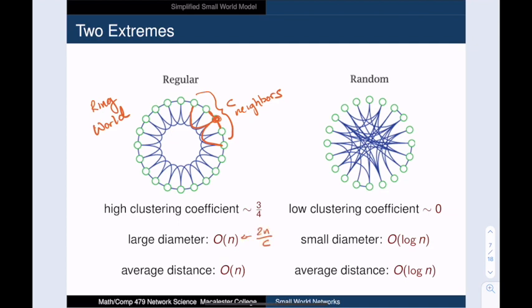The network on the right is an Erdos-Renyi random graph, with Cn over two edges. This random graph has the exact same number of edges as the ring world, but it has very few triangles. On the other hand, it does have very small diameter. Indeed, these random edges make it easy to jump around the graph, so that the longest path is actually order log n steps. In fact, having a path whose length is logarithmic in the size of the network is the gold standard for having short paths.